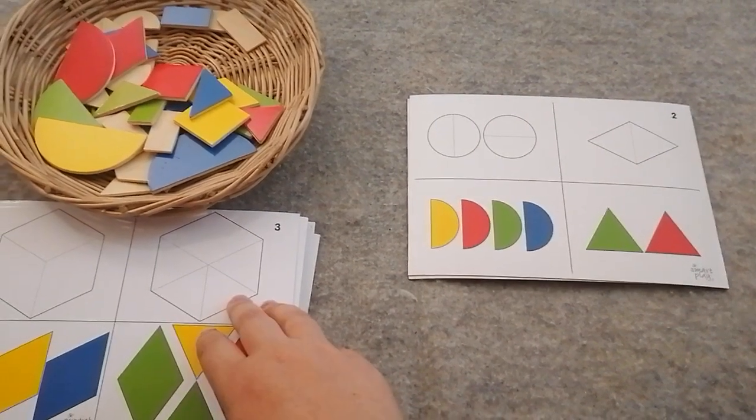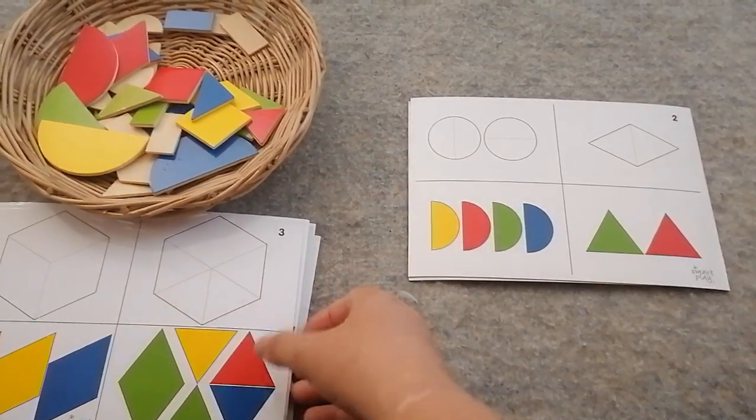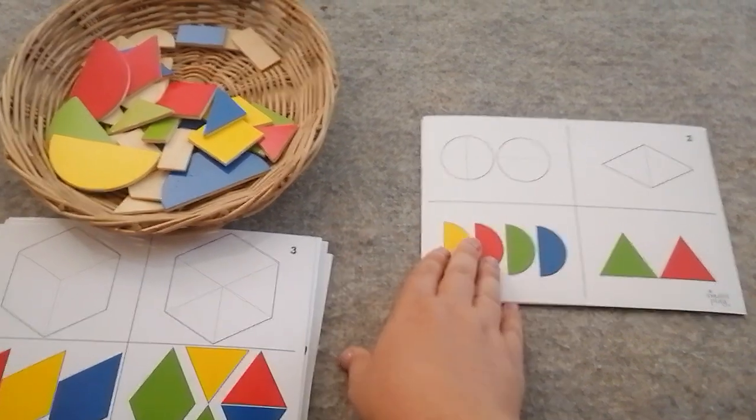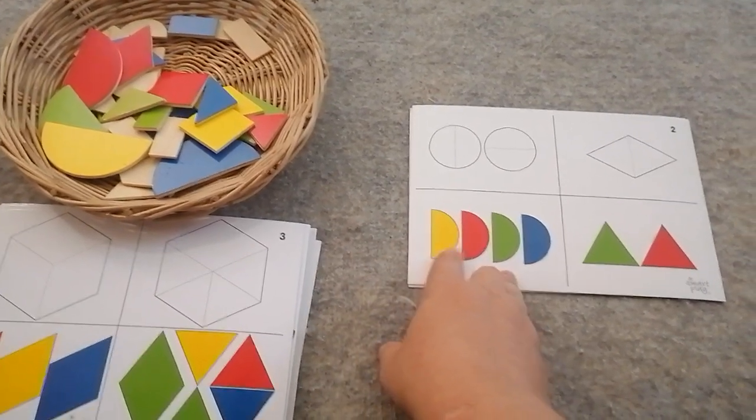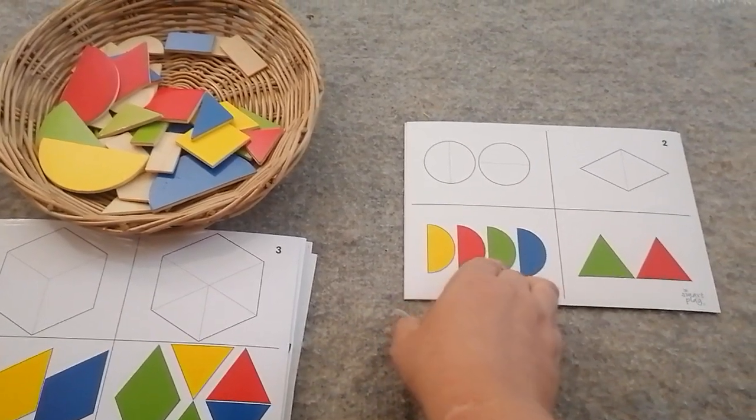We have this tangram game again and it starts off really easy and gets more difficult. So today we have all the semi-circles: yellow, red, green, and blue.